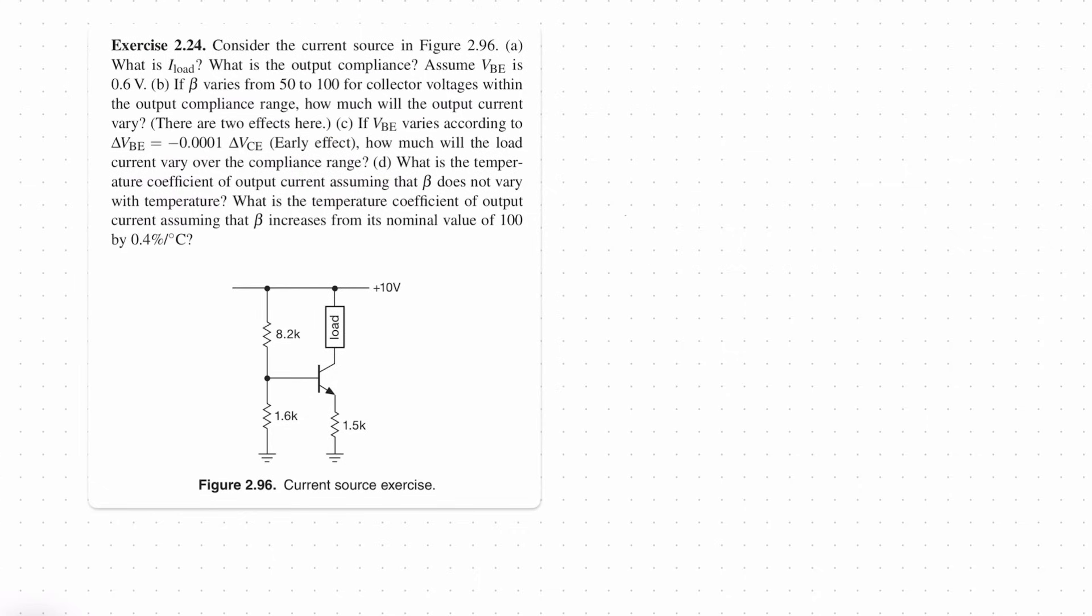Now let's quickly look at part D. And part D says what is the temperature coefficient of output current assuming that beta does not vary with temperature. So beta is the current gain. And the second part of part D is what is the temperature coefficient of the output current assuming that beta increases from its nominal value of 100 by 0.4% per degree C. So let's tackle the first part first.